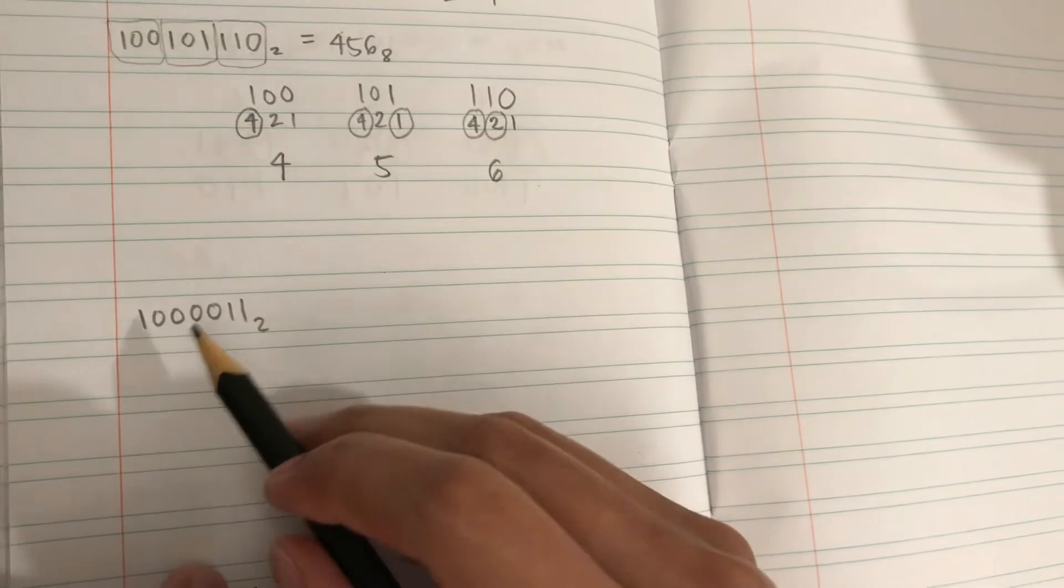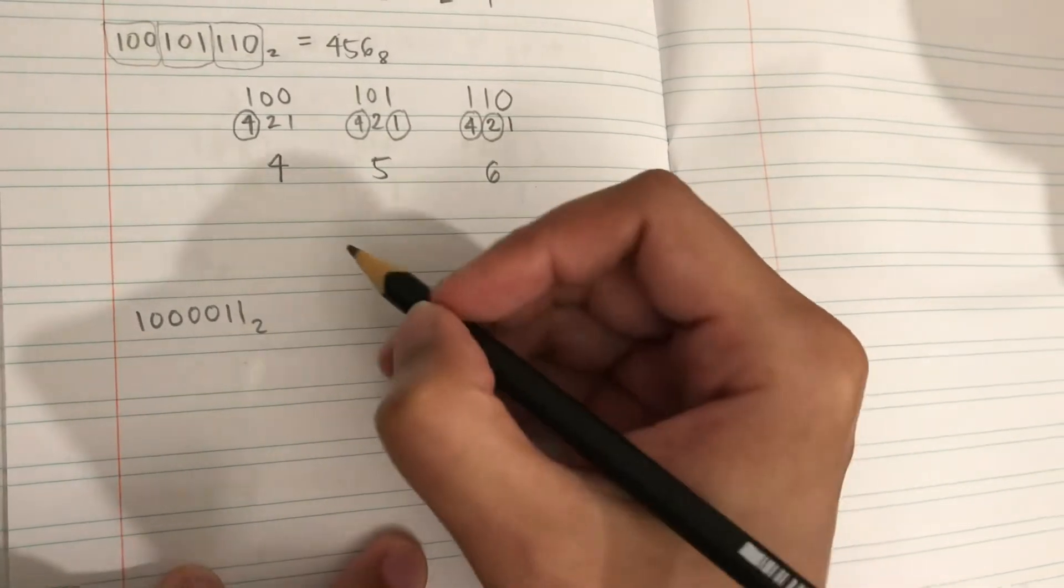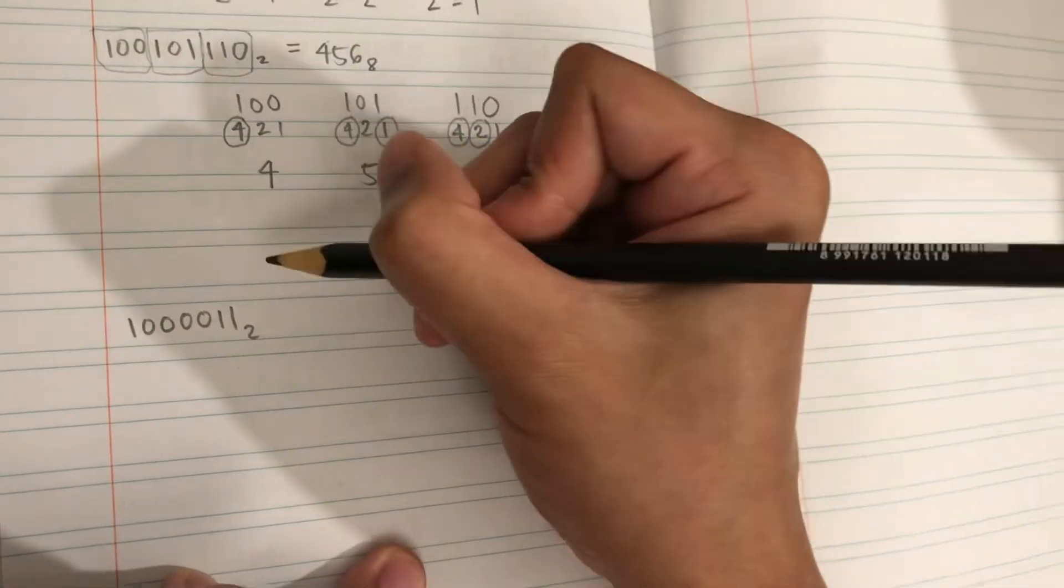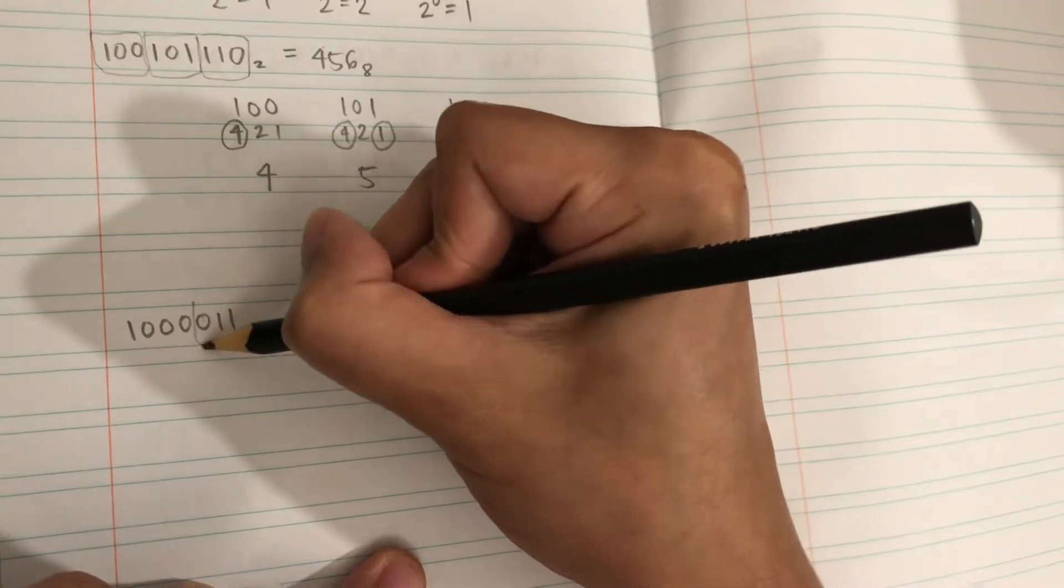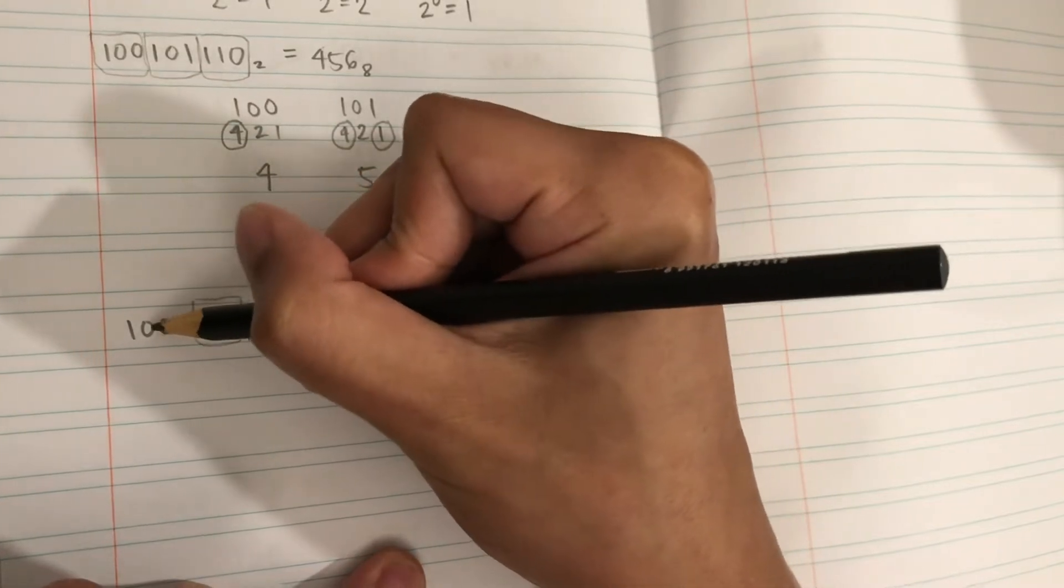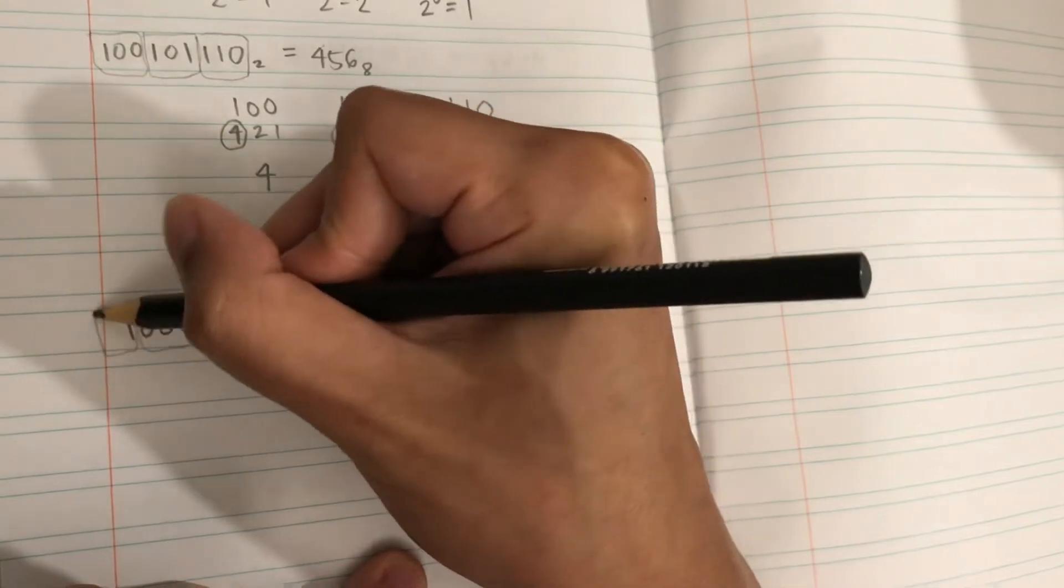Let's look at our second example: 1000011. Let's convert this to octal. We group them into three: one, two, three; one, two, three; and then this is the last one.